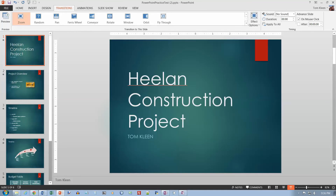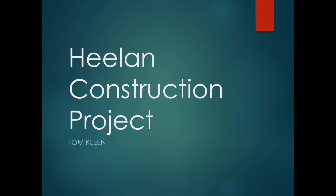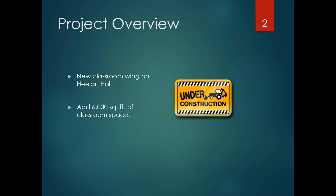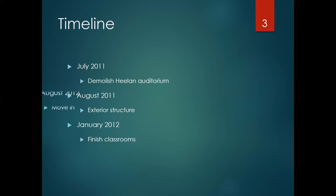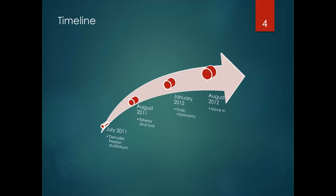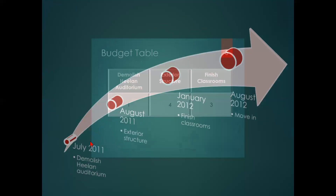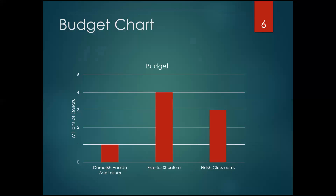Previewing the slideshow from the top, you get the Zoom transition between slides. On slide three you have to click or press the spacebar each time to bring in a new item with the Bounce animation effect. Slides four, five, and six follow in order, and one more click takes you to the end of the show. That completes all the instructions for the PowerPoint practice test.